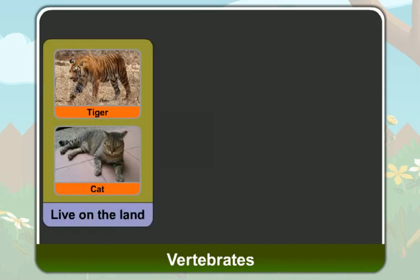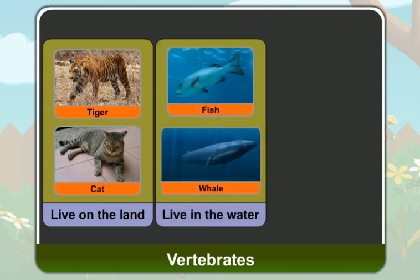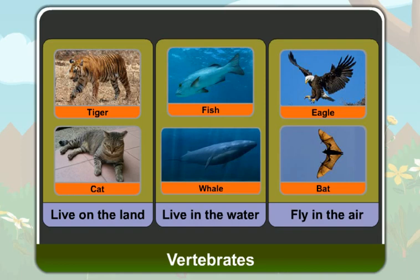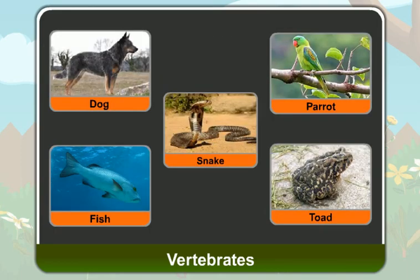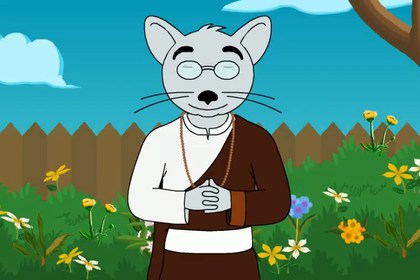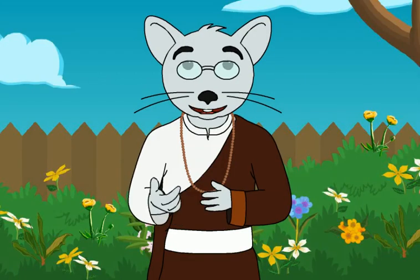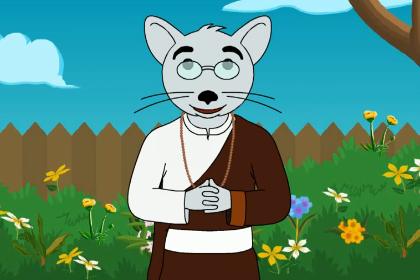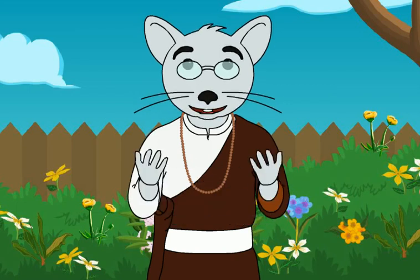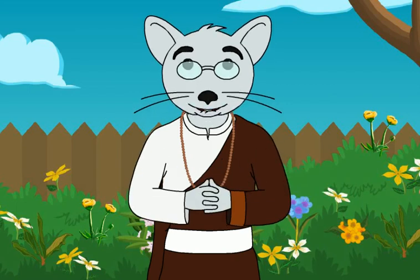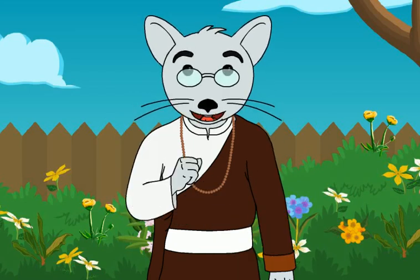Some of the vertebrates are found on land, some in water and some in the air. Different vertebrates have different body structures and shapes. Based on the different features of the vertebrates, they are divided into five groups. These groups are called classes.